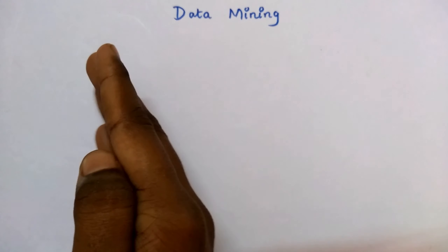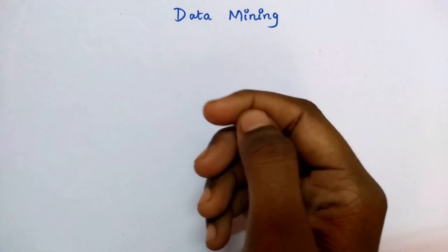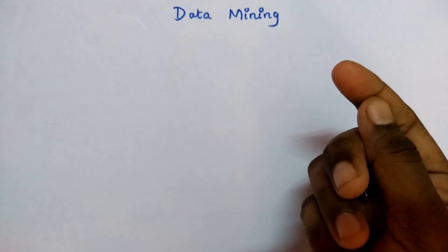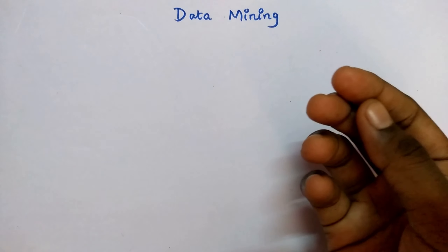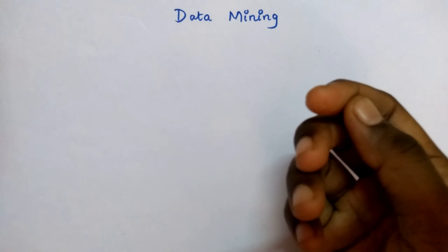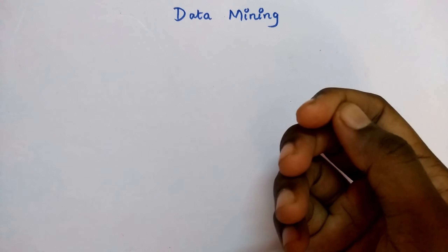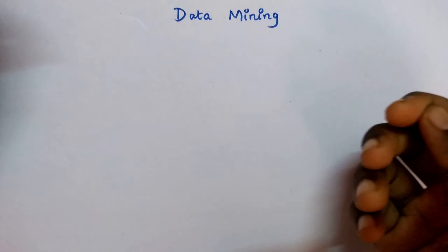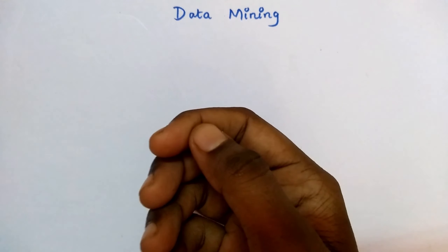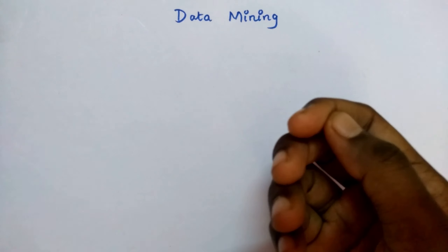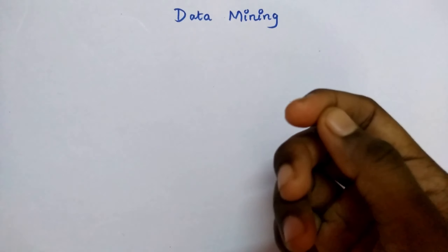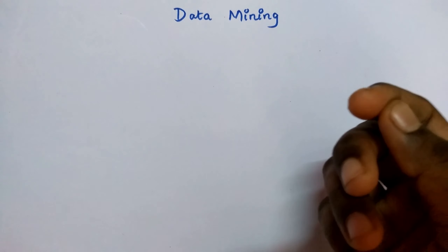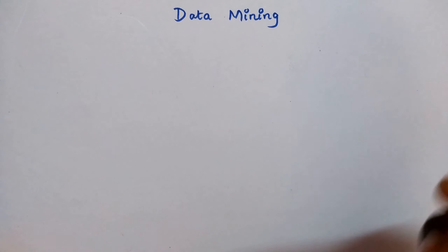What is data? Data is nothing but information — either your own information or others' information. My own information includes my audio, my video, my images, my WhatsApp chat and everything. But others' data — for example, if you are running a website or app, you may get the details of others. This is the other data.